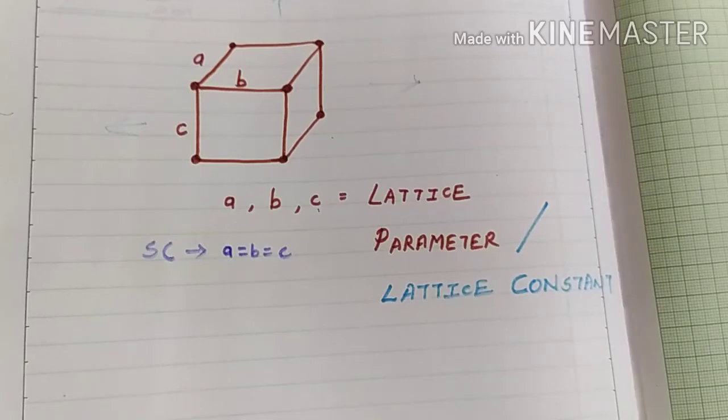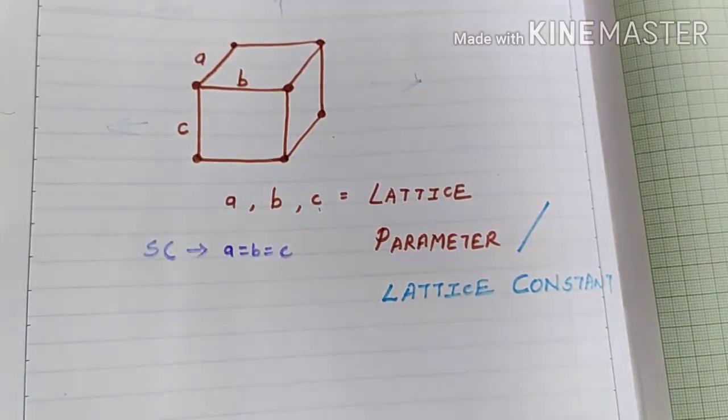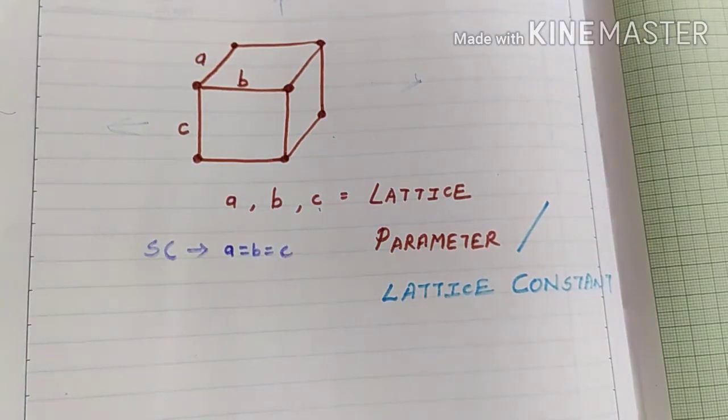Now let's understand what is lattice parameter. The a, b and c, the three sides or dimensions of the three sides of this unit cell is nothing but our lattice parameter. And these a, b and c decide what kind of unit cell we have.